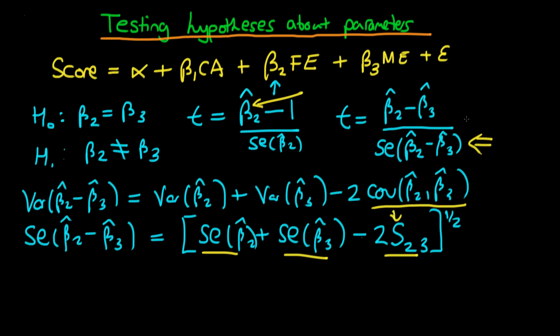Then all you do is perform a t-test against a t-distribution with n minus k degrees of freedom, where k is the number of independent variables including the constant. So here k equals four, giving us n minus 4 degrees of freedom. That's one way of testing a hypothesis about a linear combination of parameters.